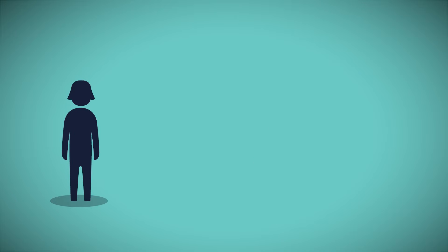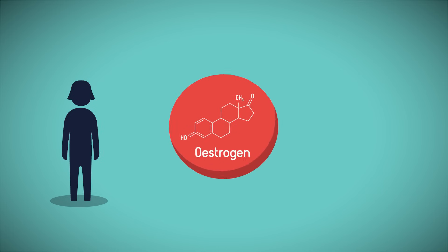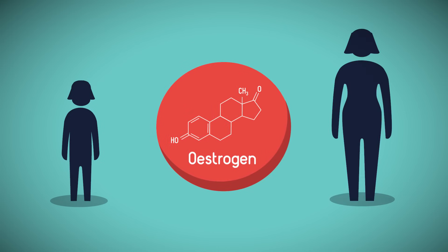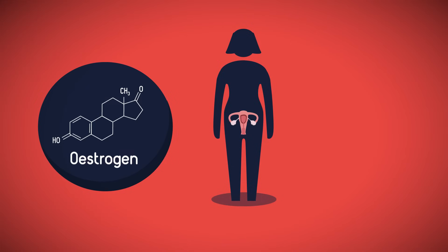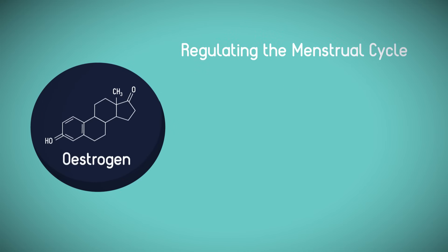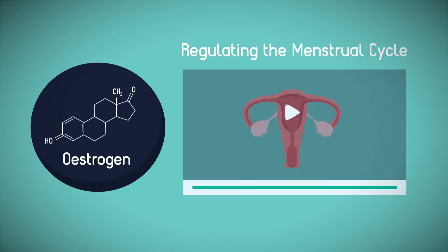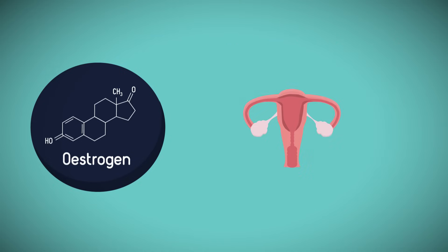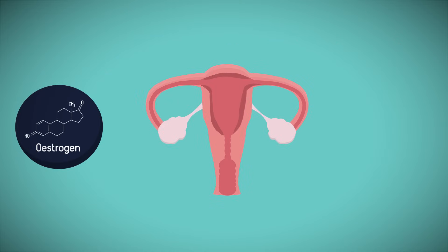In females, the hormone responsible for physical changes during puberty is oestrogen. It is secreted by your ovaries and is responsible for some body hair growth, widening of the hips, and development of breasts. Oestrogen also plays an important role in regulating the menstrual cycle. It thickens the uterus lining in anticipation of ovulation, which is the release of a mature egg from an ovary.